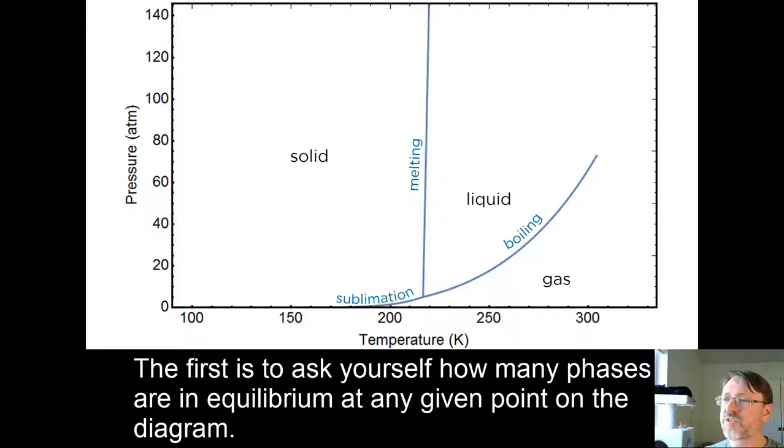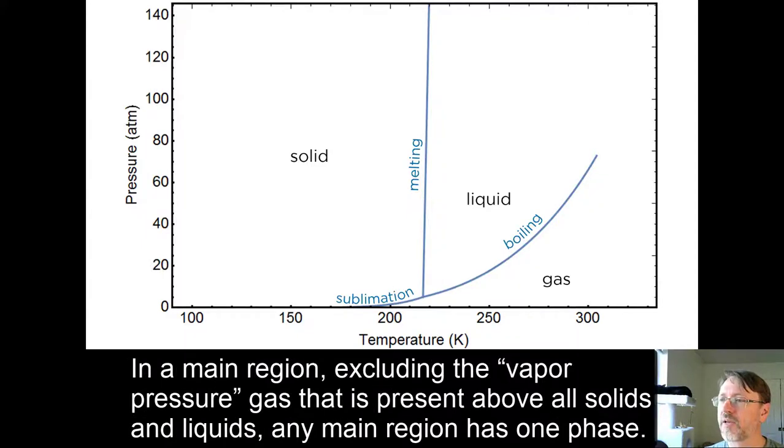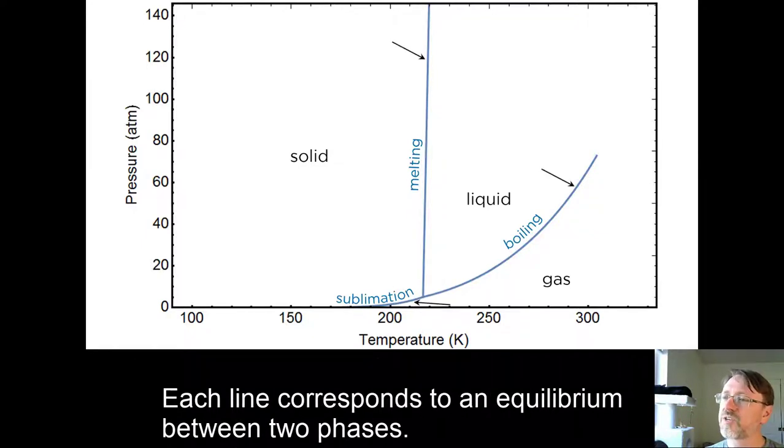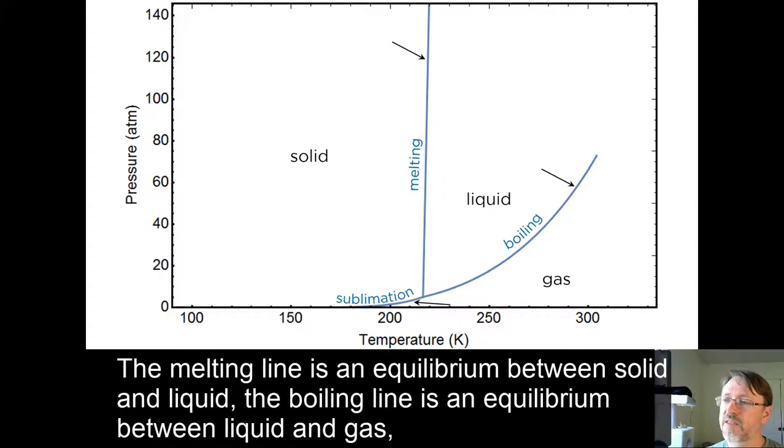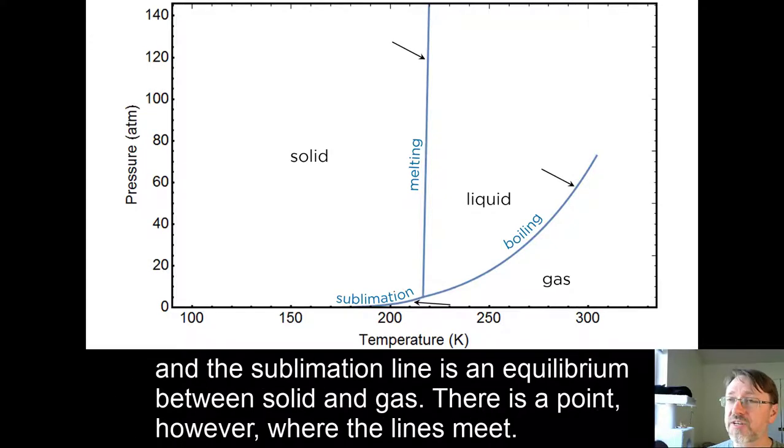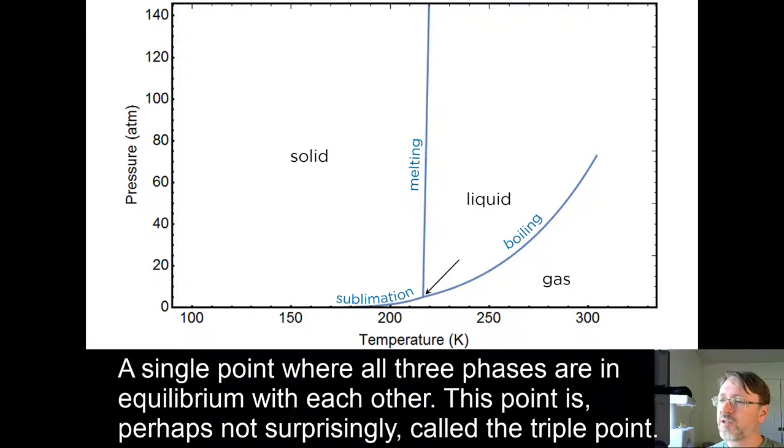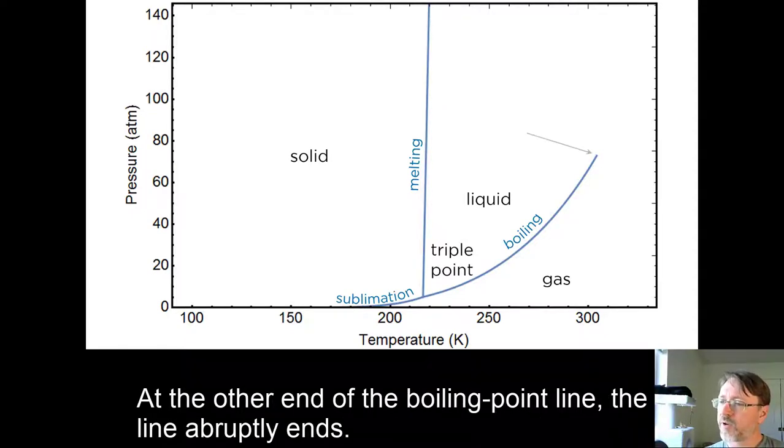There are a few other features of this phase diagram to mention. The first is to ask yourself how many phases are in equilibrium at any given point on the diagram. In a main region, excluding the vapor pressure gas that is present above all solids and liquids, any main region has one phase. Each line corresponds to an equilibrium between two phases. The melting line is in equilibrium between solid and liquid, the boiling line is in equilibrium between liquid and gas, and the sublimation line is in equilibrium between a solid and gas. There is a point, however, where the lines meet. A single point where all three phases are in equilibrium with each other. This point is, perhaps not surprisingly, called the triple point.